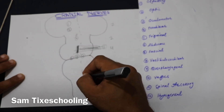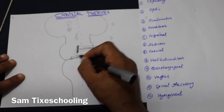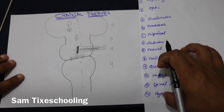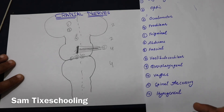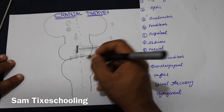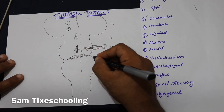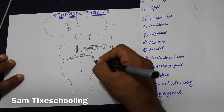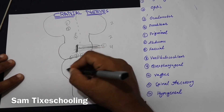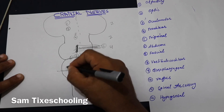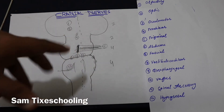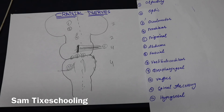So we have nerve five in the mid-pons, and six, seven, eight at the junction area. Having covered nerve eight, the last four nerves — glossopharyngeal, vagus, spinal accessory, and hypoglossal — are located in the medulla oblongata. Nerves nine through twelve run along the side of the pyramid of the medulla. That's a simple diagrammatic idea of where these cranial nerves arise from.